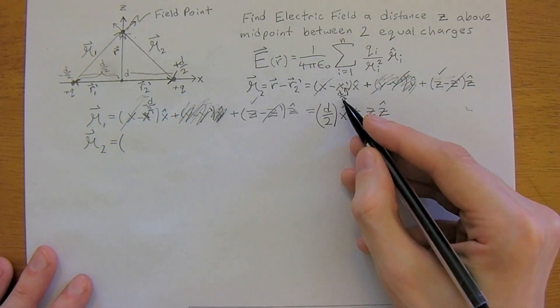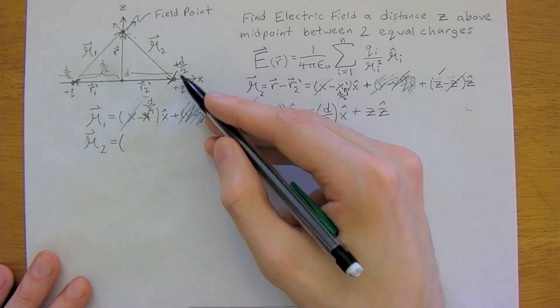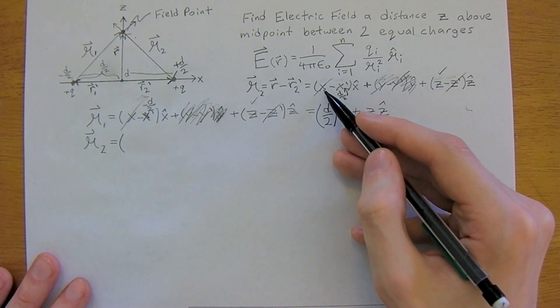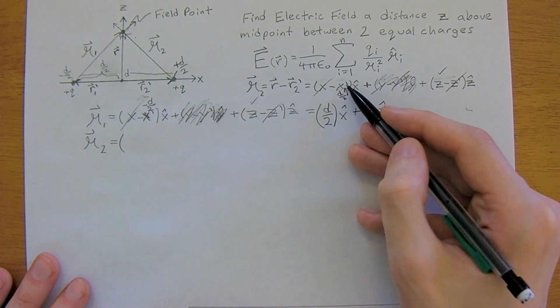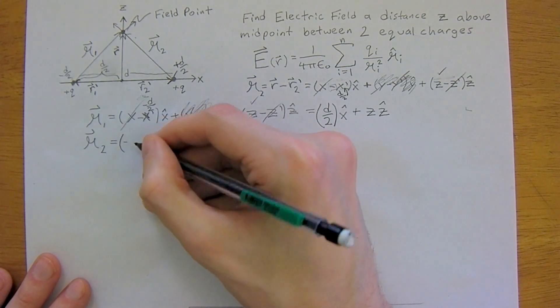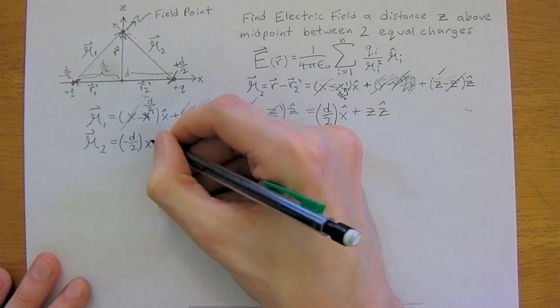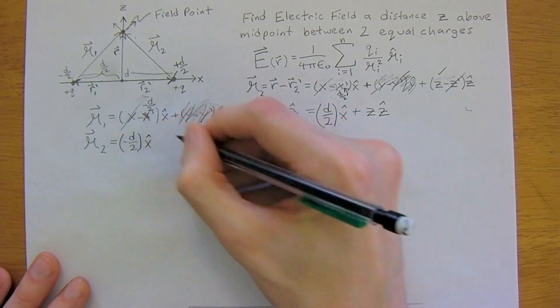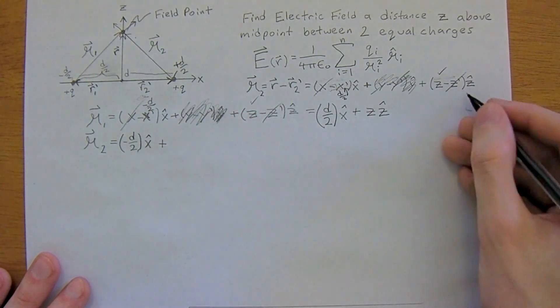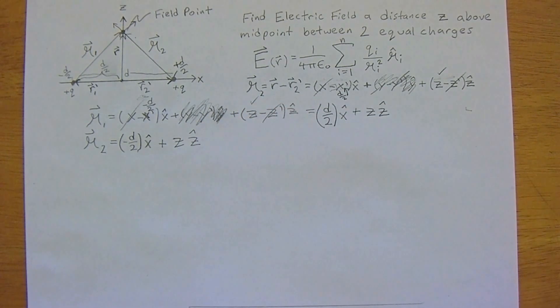So r2 is a negative d over 2. And it's actually positive here. But remember in the equation, you're doing the difference between the two. So it's x minus x prime. So that's where the negative comes from. So we have a negative d over 2 x hat. Plus again, a z z hat.